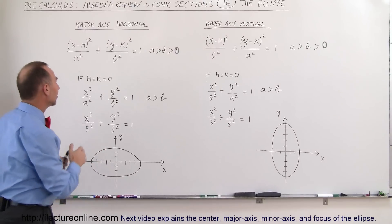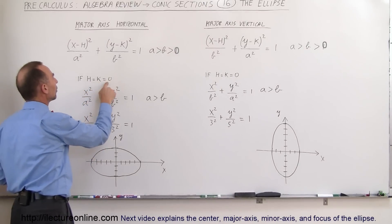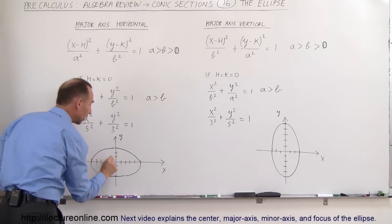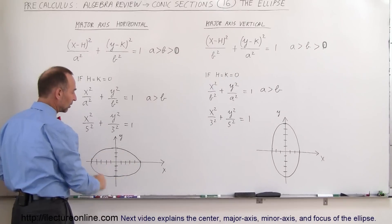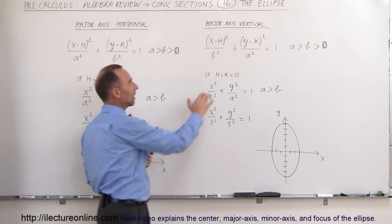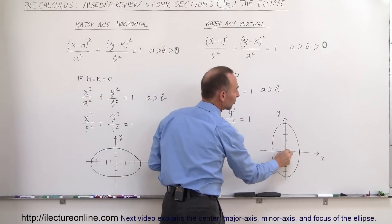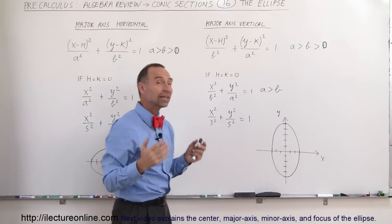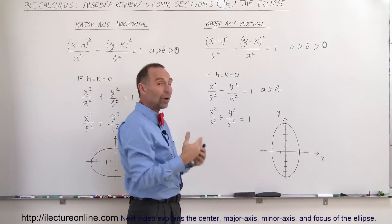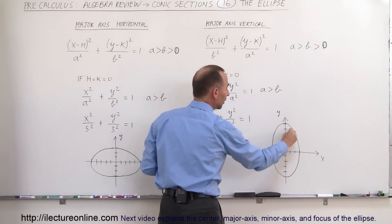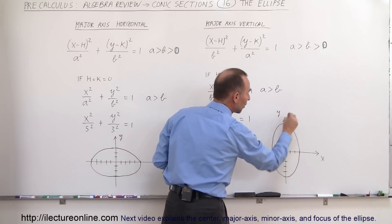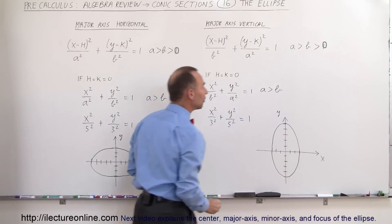For simplicity, let's say that h equals k equals 0. Well, that places the center of the ellipse at the origin and this is what the ellipse would look like. Again, here if h equals k equals 0, then that places the center of the ellipse at the origin. If h and k are not equal to 0 or either one is not equal to 0, it would displace the ellipse with the center somewhere else wherever h and k happen to be.